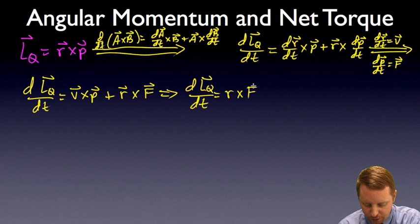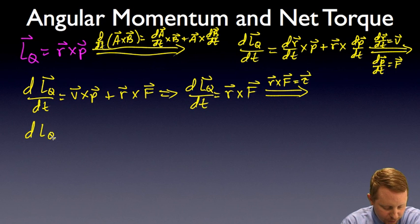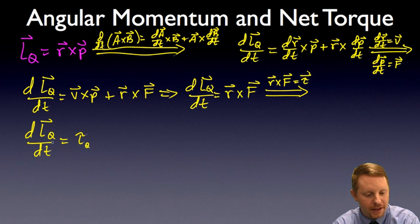Therefore, we can state that the derivative of angular momentum about point Q with respect to time is just going to be r crossed with f, and hopefully that looks a little bit familiar because we've already defined r cross f as our torque vector. Therefore, the derivative of angular momentum with respect to time about point Q equals the torque about that point Q. So what does this mean? A torque on an object is going to change its angular momentum, or vice versa, a change in angular momentum is caused by a torque.